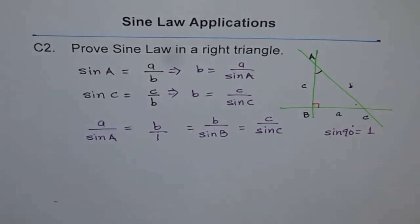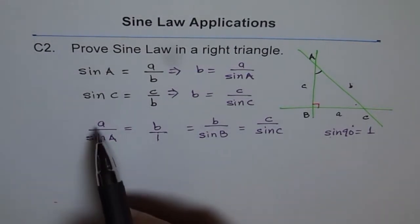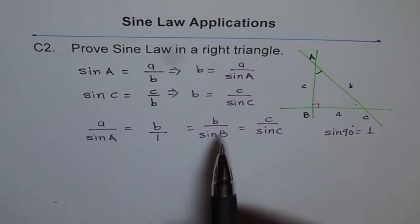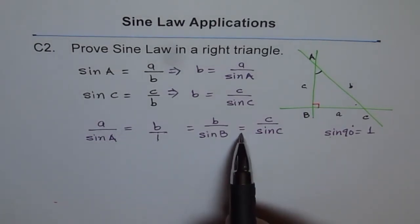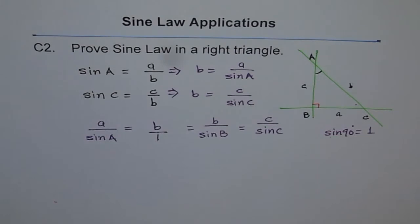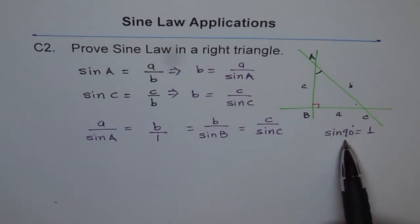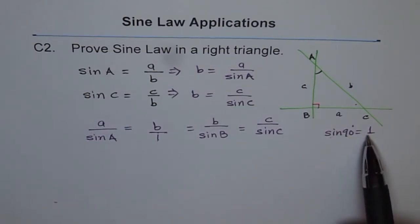Now do you see that sine law right there before your eyes? a over sin A equals b over sin B equals c over sin C. That is how it is. So in a right triangle, it's much simpler for us to do things since one of the angles is 90 degrees, and that gives us 1.